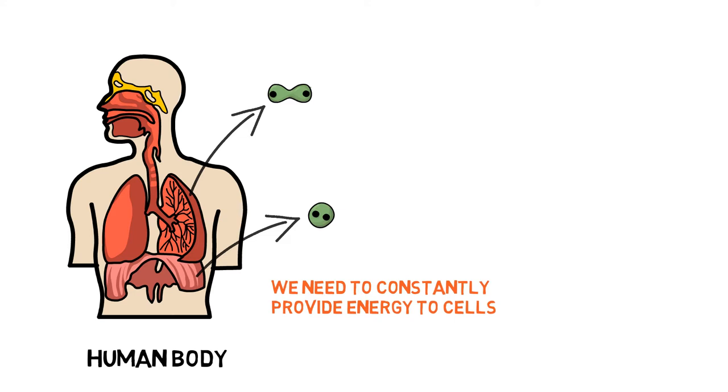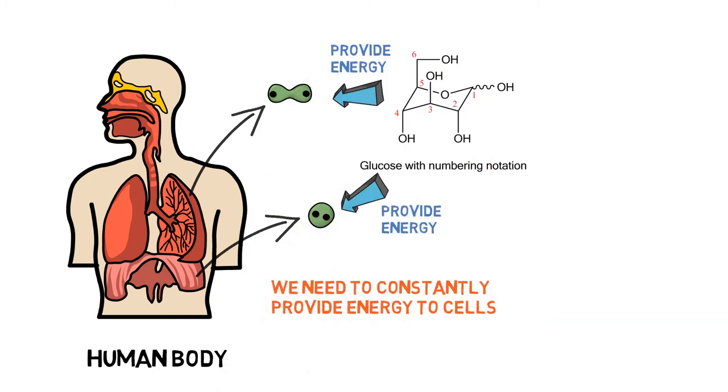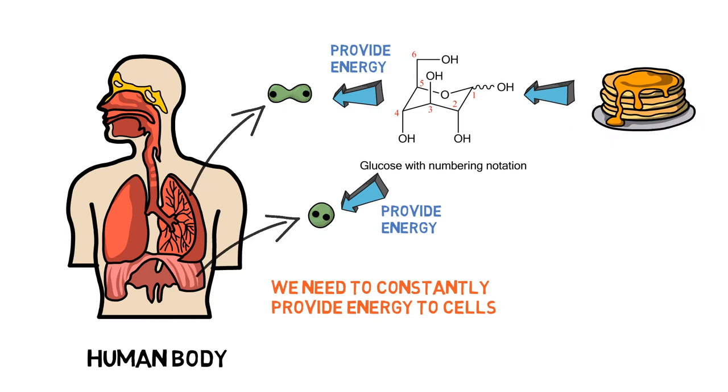Glucose is a simple sugar containing one sugar molecule. It is the main type of sugar in the blood and the major source of energy for the body's cells. We consume foods every day, and they are converted to glucose which is delivered to organ cells via the bloodstream.